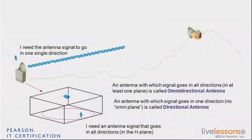Let's look at some antenna types and uses. As a CCNA, you're not supposed to know all the antennas in the world, but you're supposed to have a good understanding of what types there are and why you would use one or the other. If you look at the general categories, there are basically two types of antennas. If you need a signal to go in one direction, you're going to use a radiation pattern that sends a lot of energy there but not too much on the sides. Those are called directional antennas.